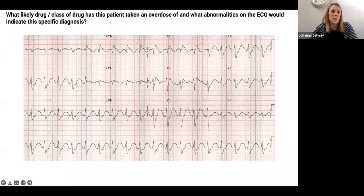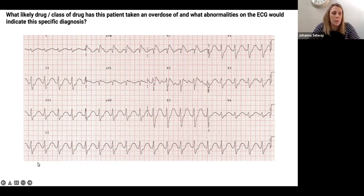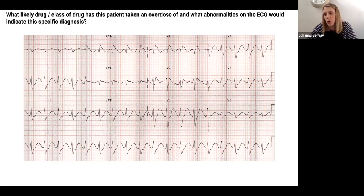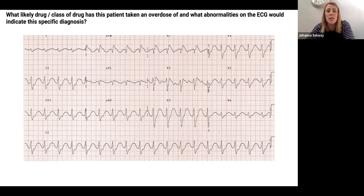This is her ECG. People have mentioned a wide QRS — definitely a broad QRS. Actually there is prolongation of all intervals: PR prolongation, QRS, and QT interval. This is a tricyclic antidepressant overdose — amitriptyline overdose. They often present with ECG changes and reduced GCS.